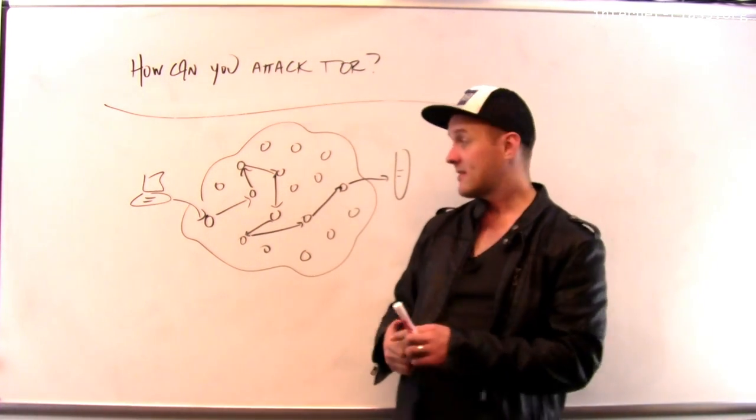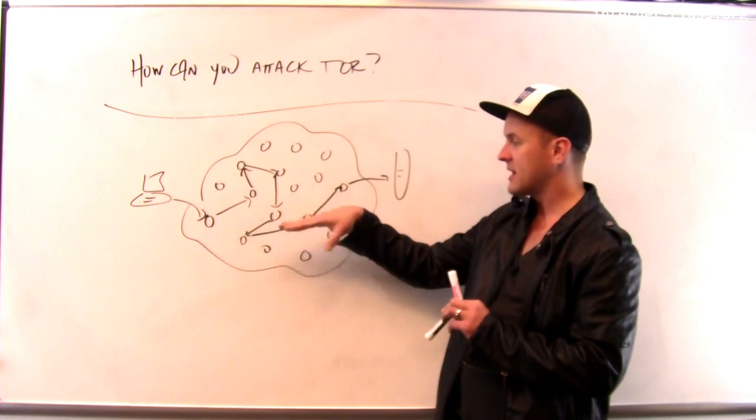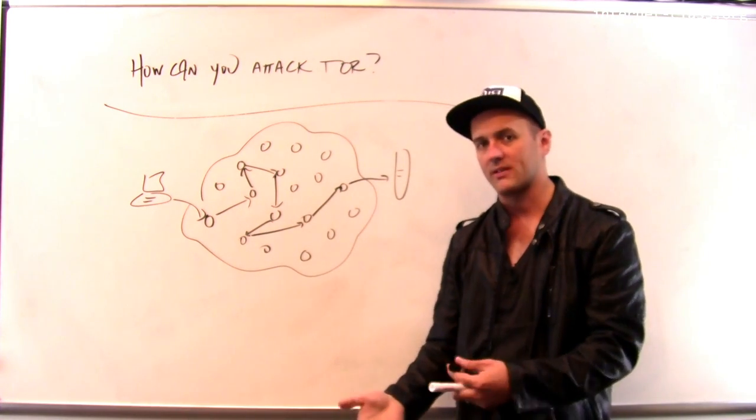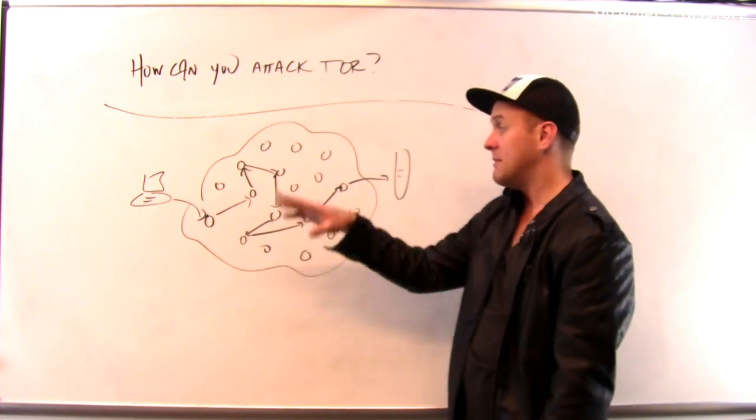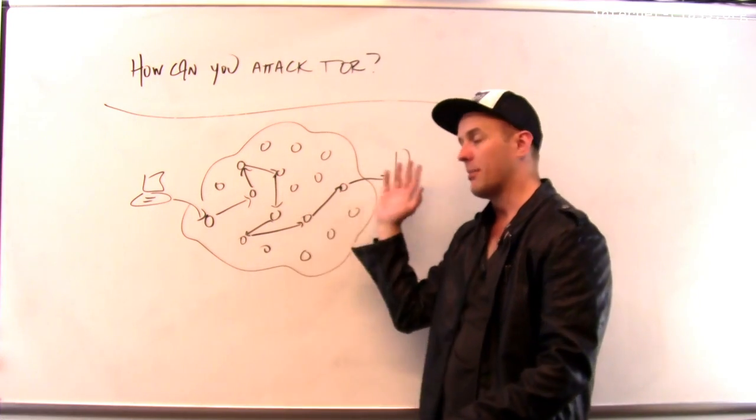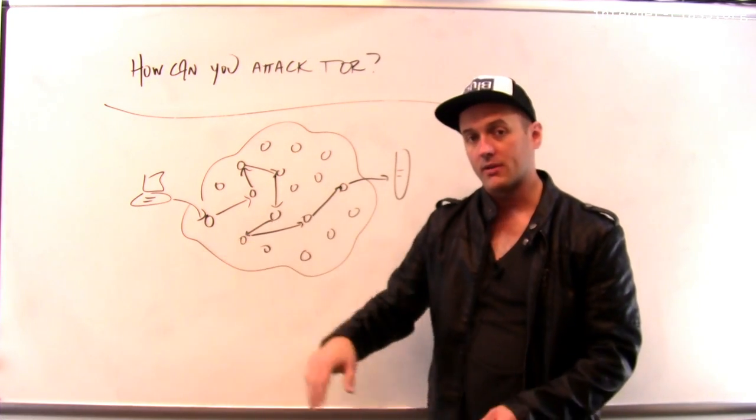And those circuits also have the effect of mixing up all the traffic within the Tor network itself. So if I was monitoring one of these nodes or even many of them, I can't figure out where packets are going or where they're coming from - unless I can control a large part of the Tor network.